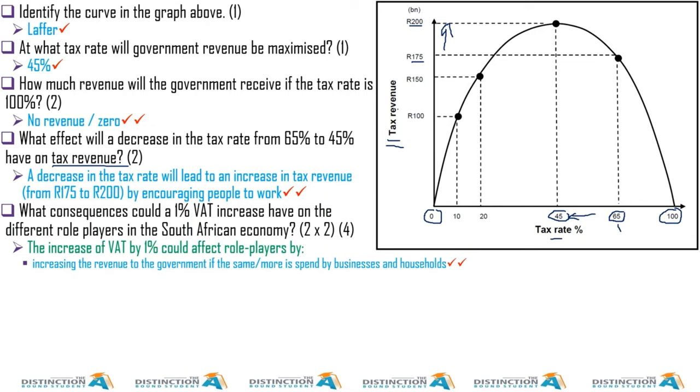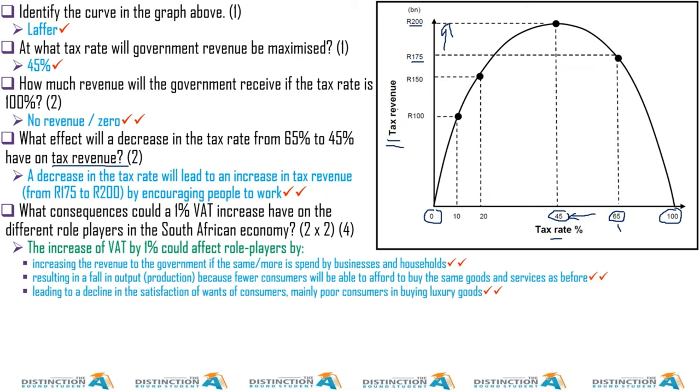In some cases they'll make less because people might be buying less, resulting in a fall in output because fewer consumers will be able to afford to buy the same goods and services as before. This leads to a decline in the satisfaction of wants of consumers, mainly poor consumers.